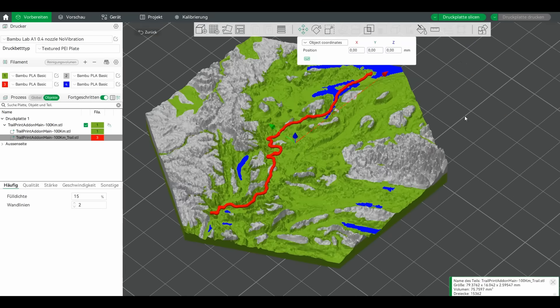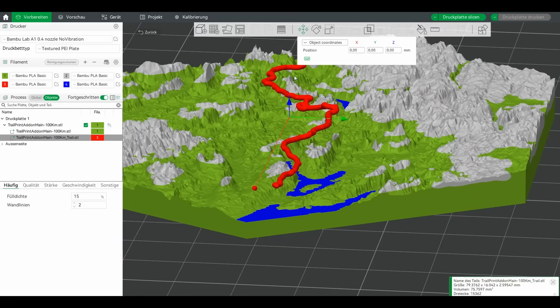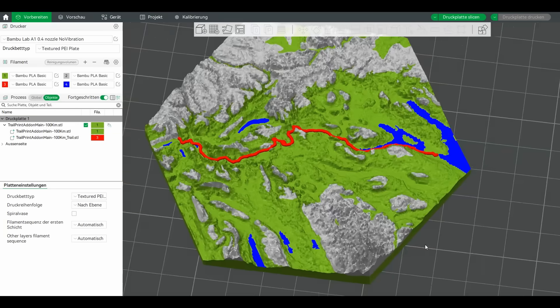Then I'm importing the STL file for the trail and I'm ready to print it.